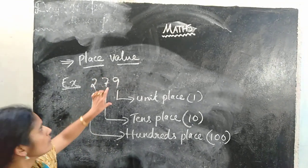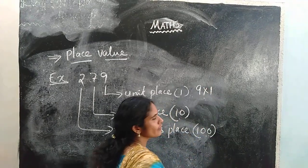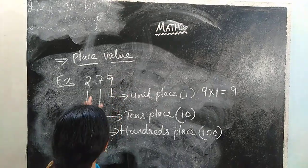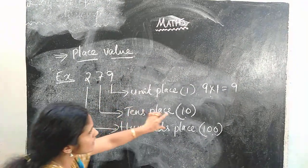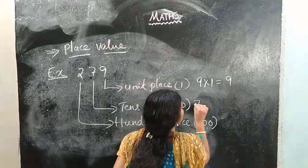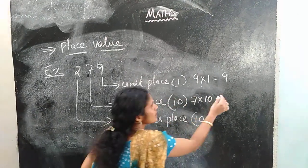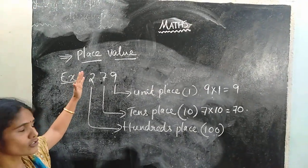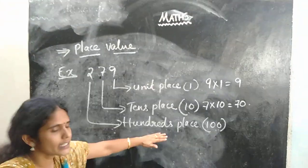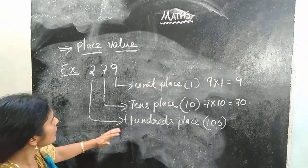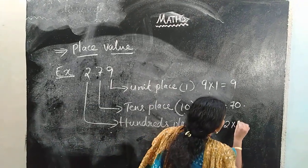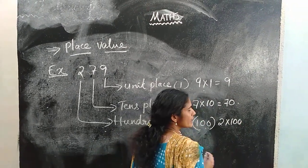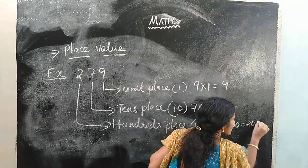The place value of 9 means 9 multiplied by 1 is equal to 9 — that is the place value of 9. What is the place value of 7? The 7 is in the 10s place, so 7 tens are 70. Then the digit 2 is in the 100s place. So the place value of 2 is 2 multiplied by 100 — 2 hundreds are 200.